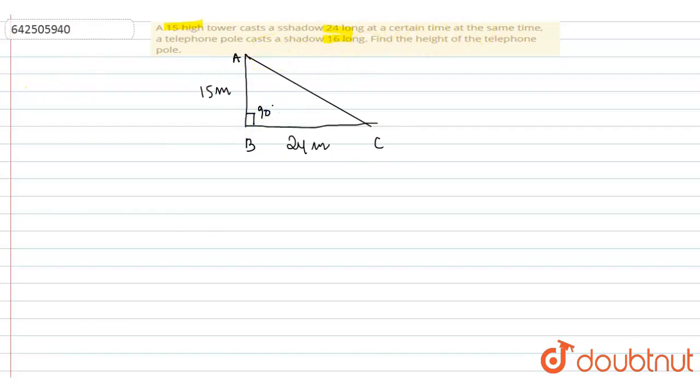Now, the question says there is a telephone pole. This pole casts a shadow whose height we don't know. So let's suppose this be the height of the pole. Its shadow is 16 meters long, so the shadow will be something like this. Now again, it's a right angle triangle.